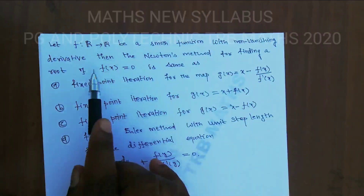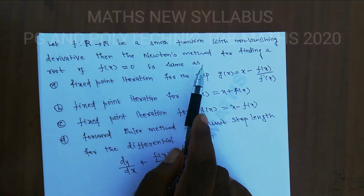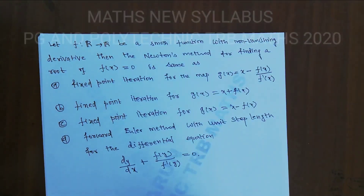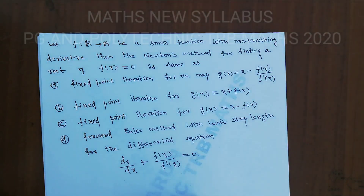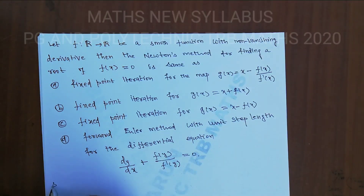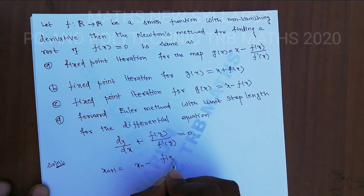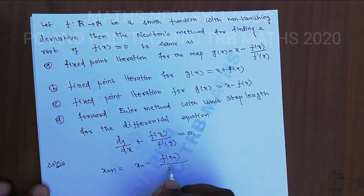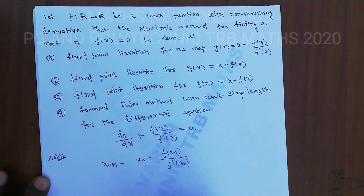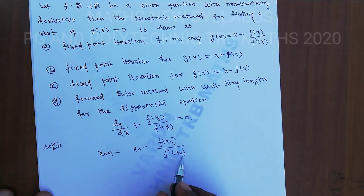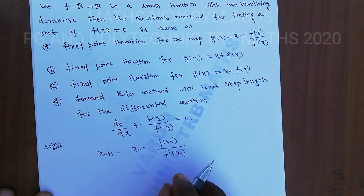The Newton-Raphson method for finding the root of f(x) = 0 has the iteration formula: x_{n+1} = x_n minus f(x_n) divided by f'(x_n). This is well defined because f'(x) is not equal to 0. That is the Newton-Raphson iteration formula.